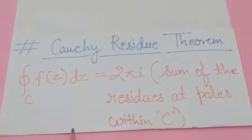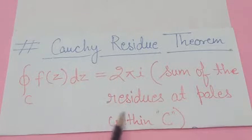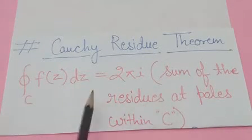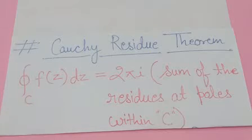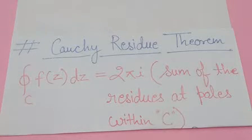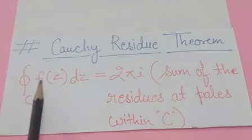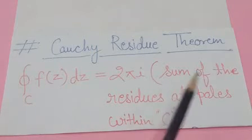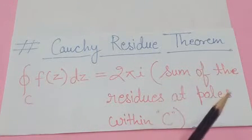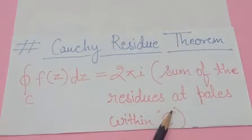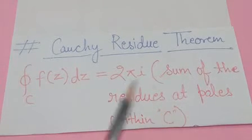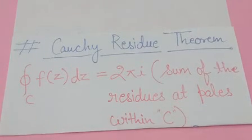Most importantly, after finding the poles, you need to find the order of the poles. Next, you need to know how to find the residue. There are different formulas for finding residues. Note that you only need to find the residue for those poles which lie within your curve C.